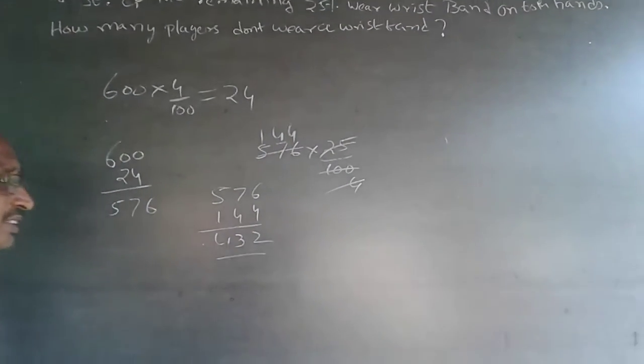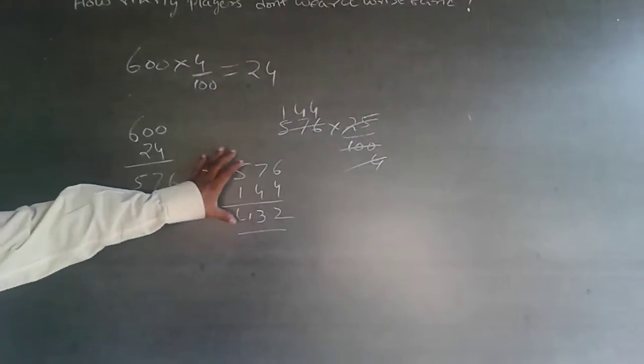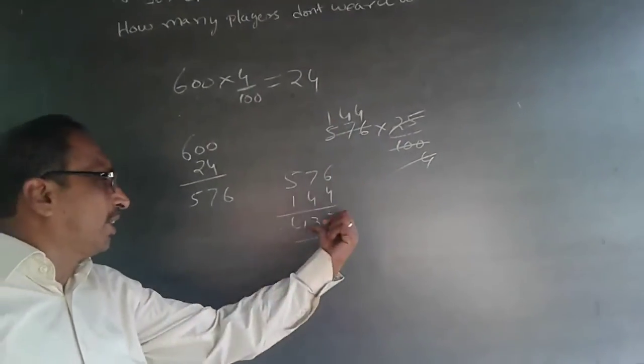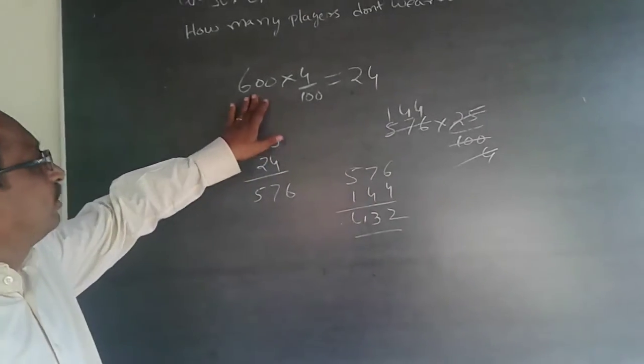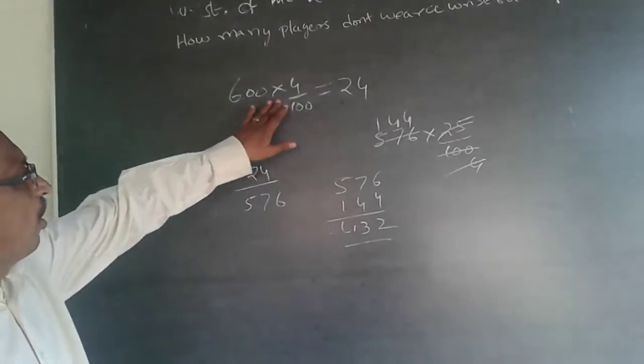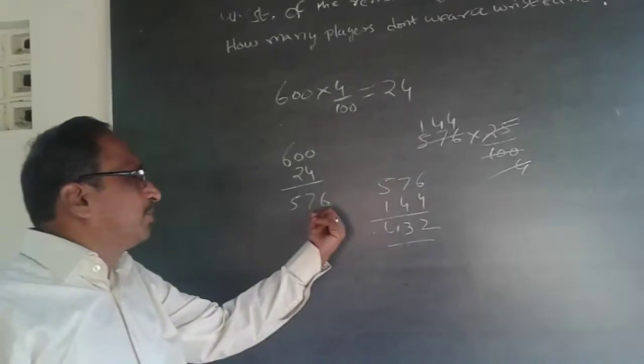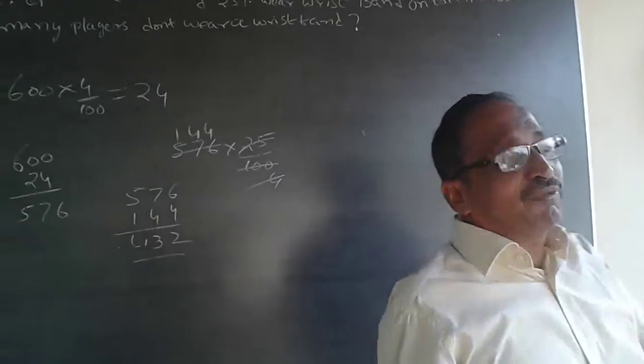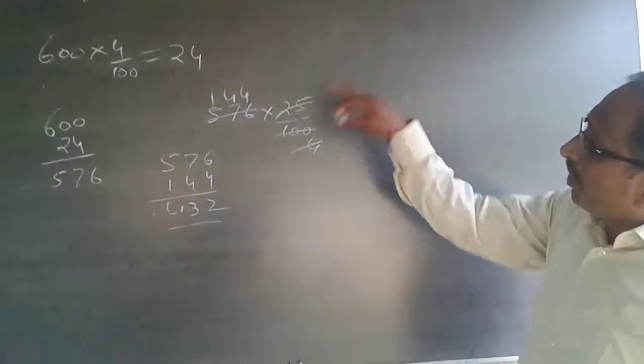This is the way of doing it. But honestly, you don't have to do it like this. Why, honestly, calculate 25% and minus it? See here, once you find out 600, 4% it is 24. This balance is 576. They say 25% are wearing wristband on both hands. Find out how many are not wearing.